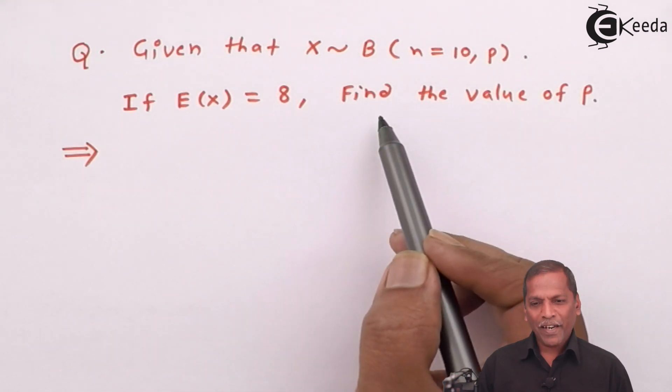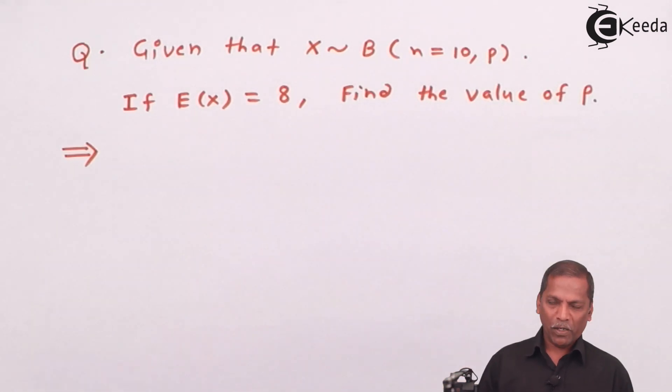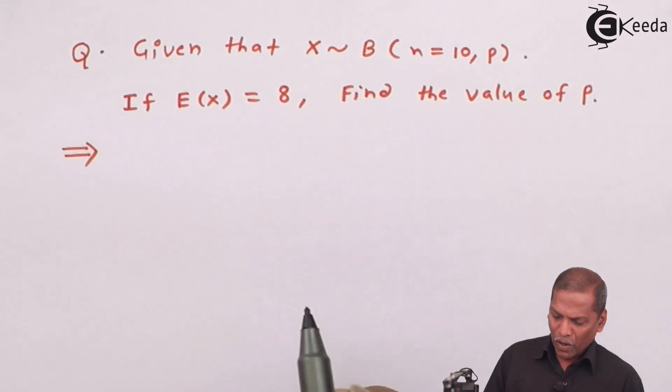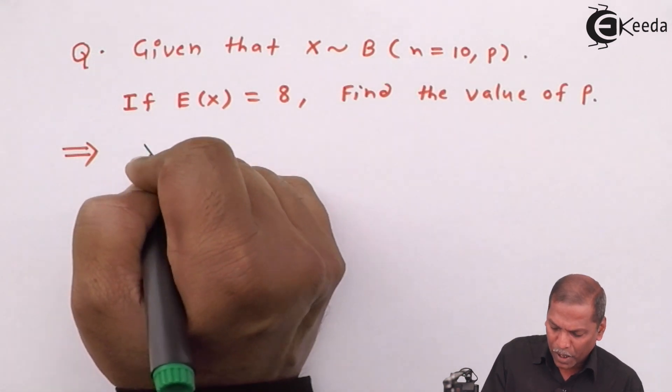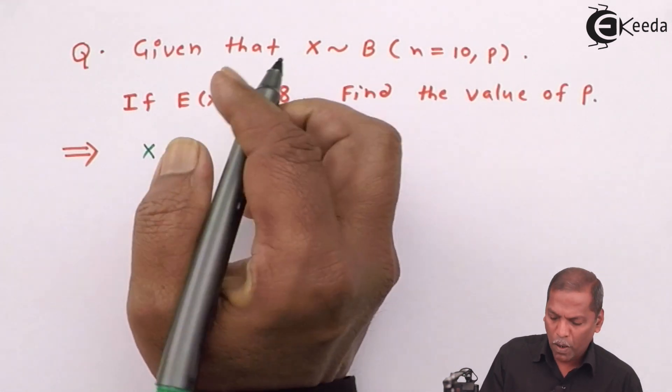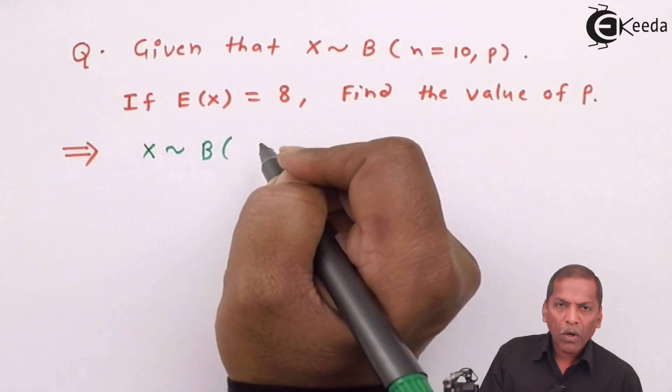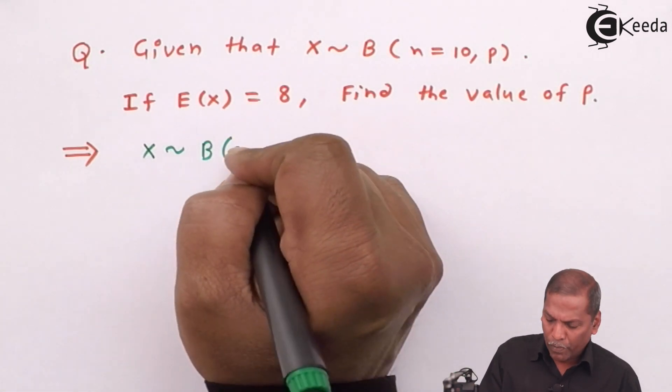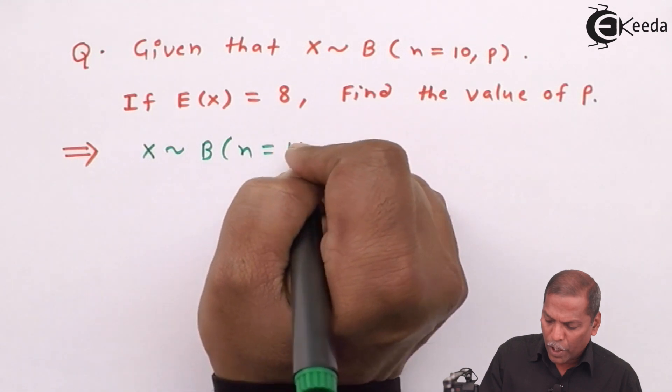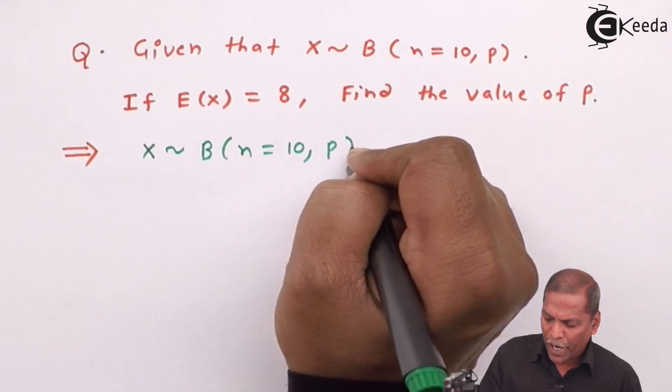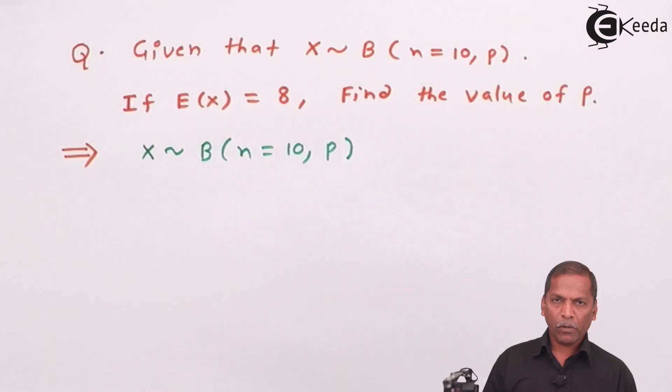Now, let's see the solution. The solution is quite simple. First of all, we write X follows binomial distribution with parameter n equal to 10, P. From this, we get n, that is number of trials, is equal to 10.